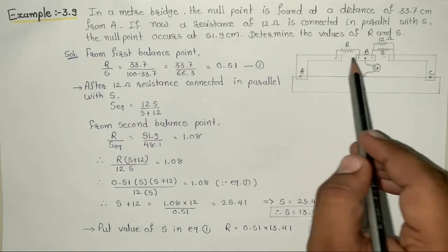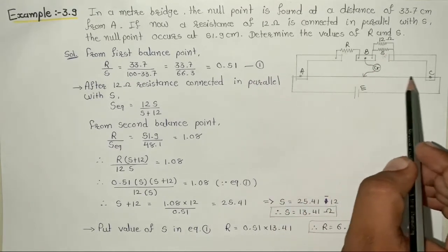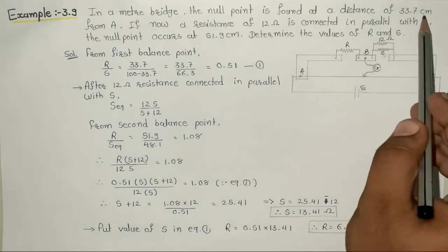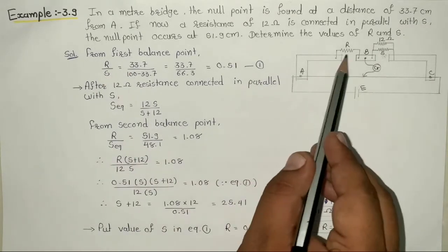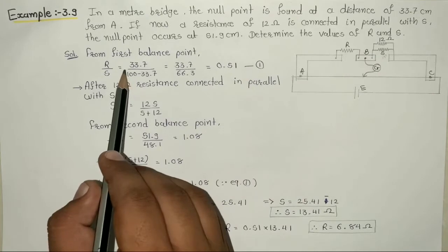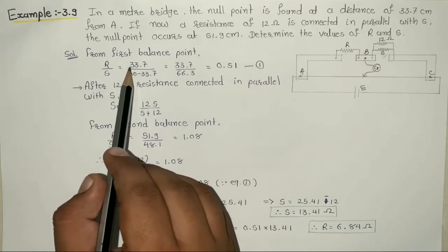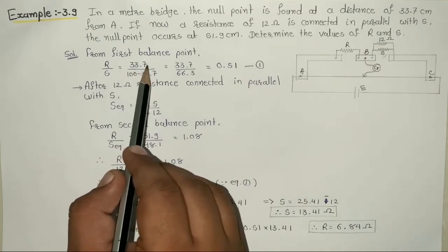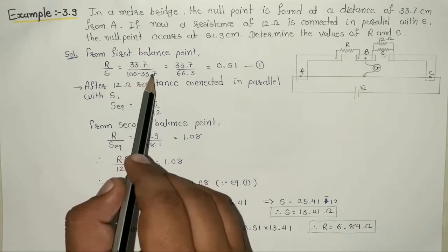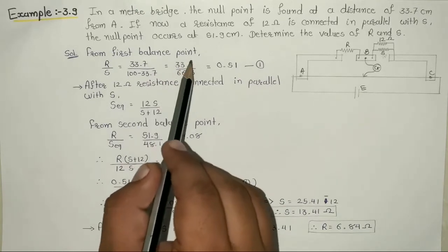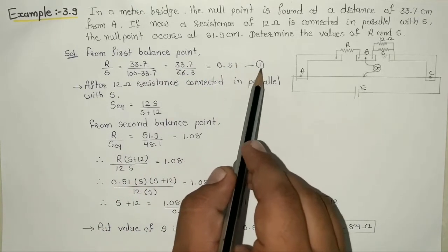First balance point के लिए, अगर equation लिखें तो: R upon S equal to null point का distance — A से 33.7 cm. तो L2 हो जाएगा 100 minus 33.7. Solve करेंगे तो answer मिल रहा है 0.51. यह Equation number 1.